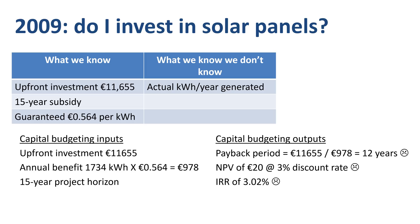I normally don't calculate IRRs with two decimals, but made an exception here. Remember that in 2009 we were deep into a financial crisis. Stock market returns were very volatile, with some people making huge losses. Interest rates were very low, and you couldn't even trust that your savings in the bank were safe, as banks were collapsing left and right. So given the circumstances and my interest in green technology, the project economics were not that bad in context, and I expected my base case to be the bare minimum.